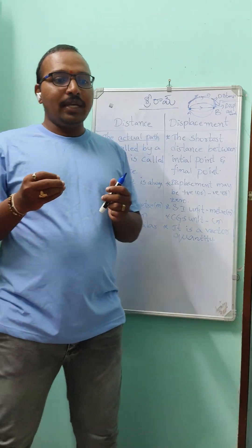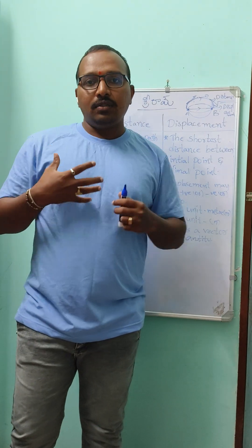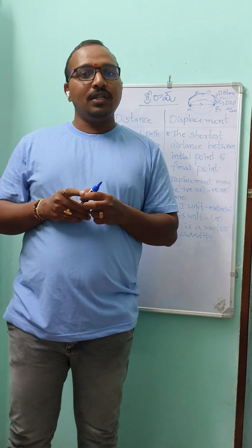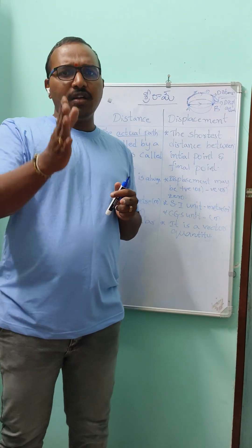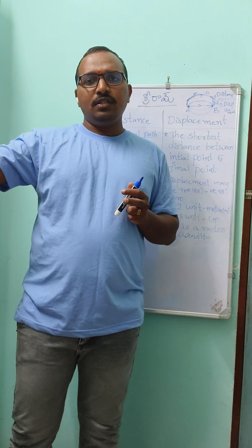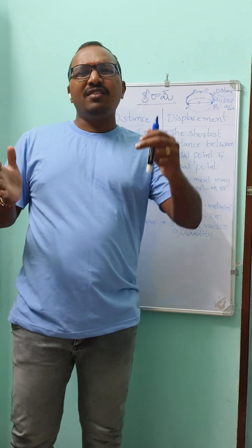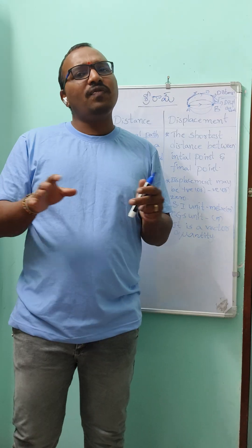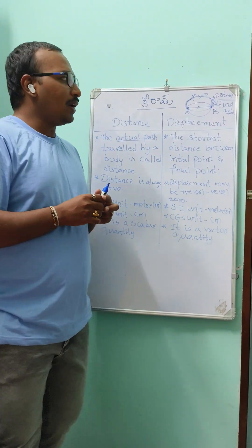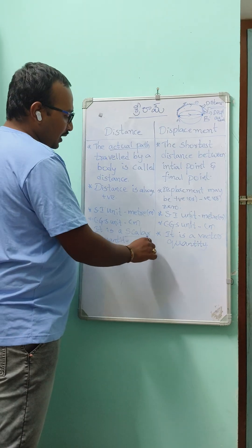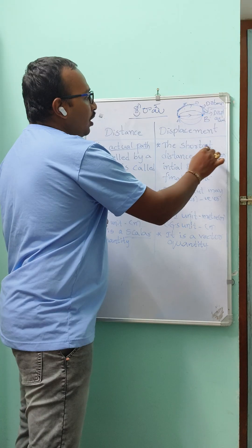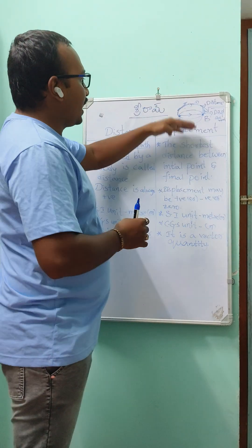For example, the distance between Nello to Buchi is 15 kilometers. On the road there are n number of curves and turns — there is no particular direction for distance. Only the magnitude is there, that's why distance is a scalar quantity.